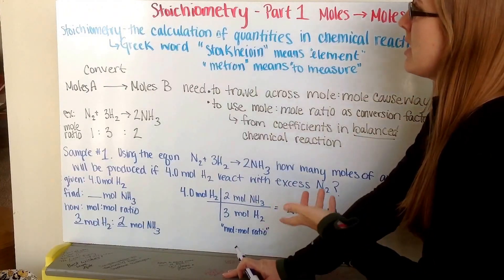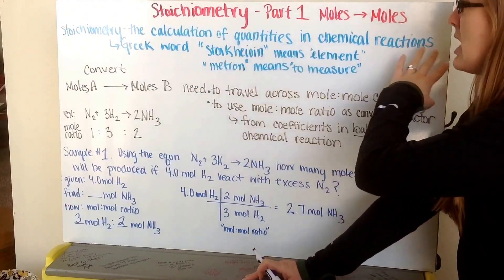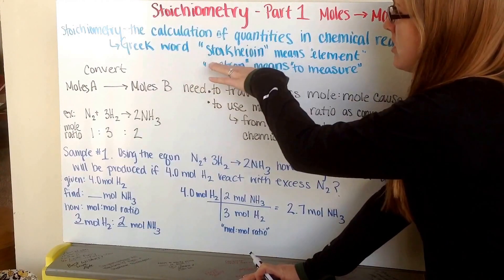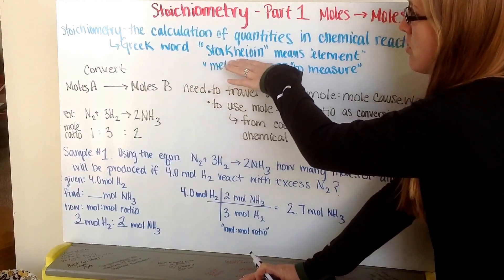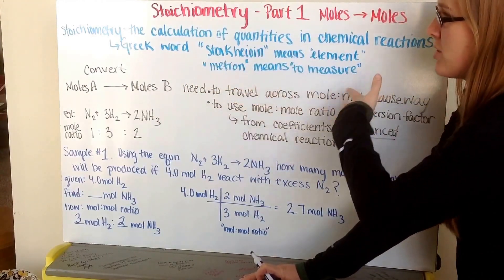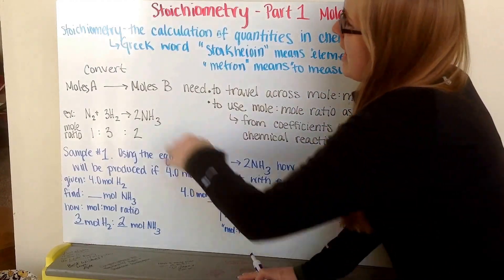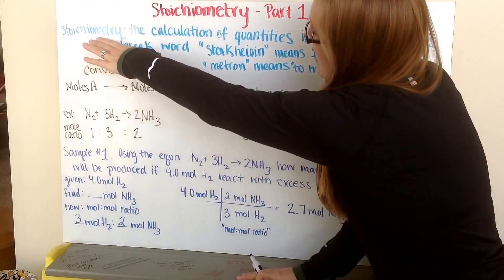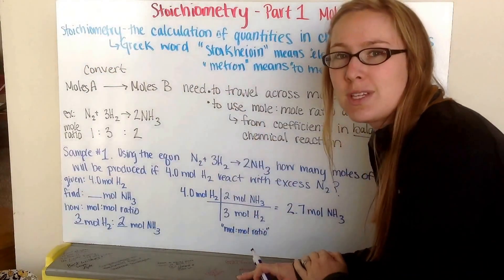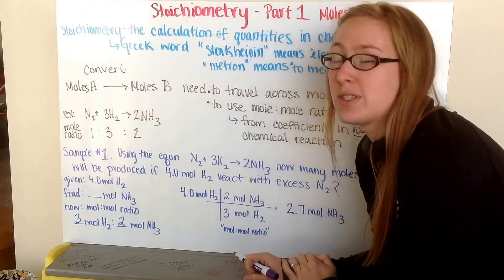Stoichiometry is the calculation of quantities in chemical reactions, from the Greek words stoikionin, meaning element, and metron, which means to measure. Any words that you see that end in -metry are different types of words that describe measuring something.